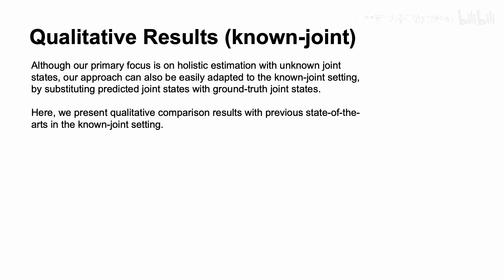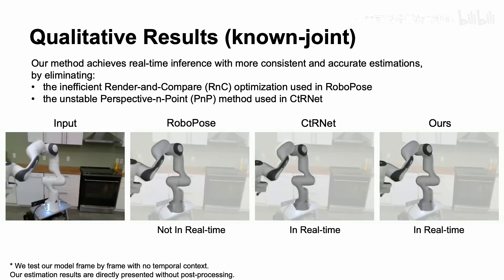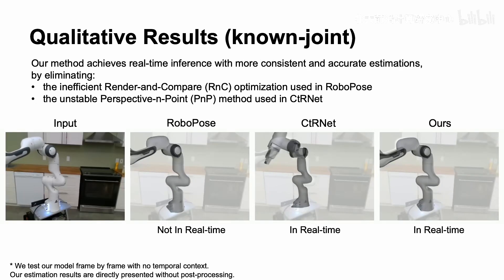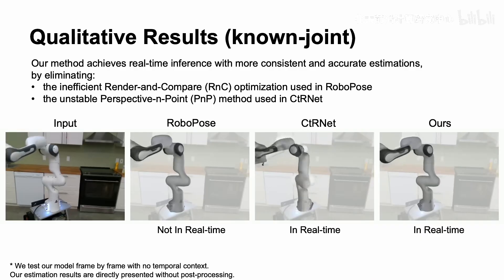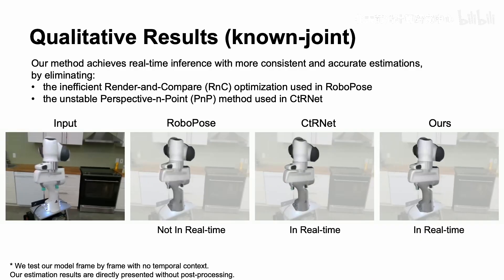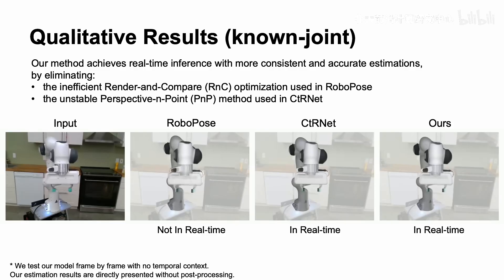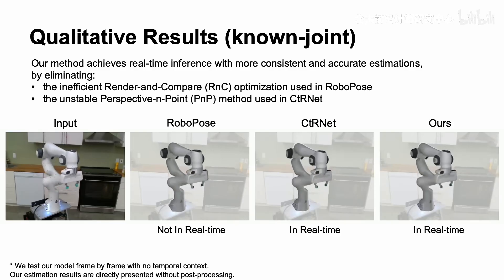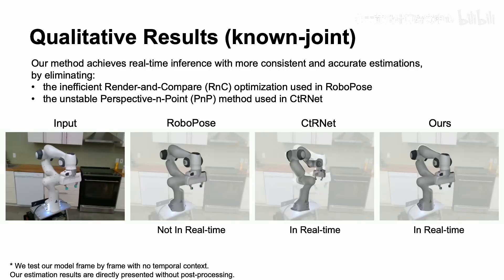Although our primary focus is on holistic estimation with unknown joint states, our approach can also be easily adapted to the known joint setting by substituting predicted joint states with ground-truth joint states. Here, we present qualitative comparison results with previous state-of-the-arts in the known joint setting. Our method achieves real-time inference with more consistent and accurate estimations by eliminating the inefficient render-and-compare optimization used in RoboPose and the unstable perspective endpoint method used in CIRNet.